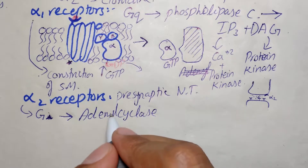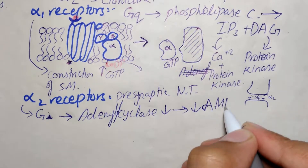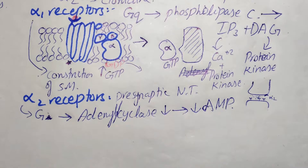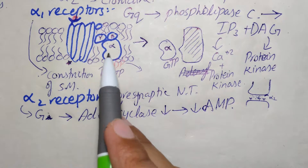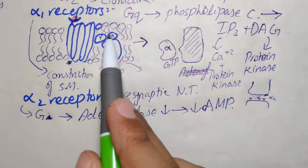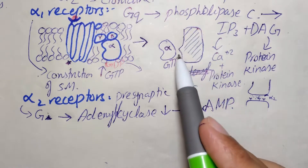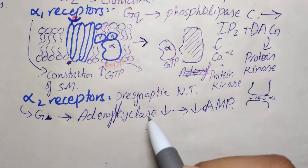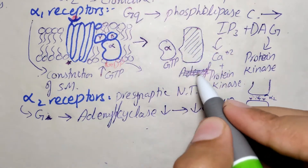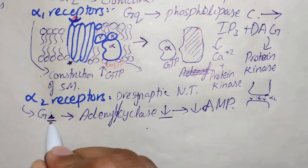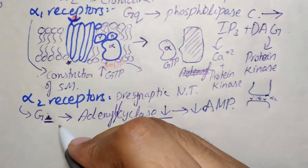When the alpha 2 receptor is activated, adenylyl cyclase is inhibited, thereby decreasing cyclic AMP. If we consider the same receptor diagram but with a GI protein — having the same alpha, beta, and gamma subunits — activation causes inhibition rather than stimulation. GQ and GS are stimulating proteins, whereas GI is an inhibitory protein.